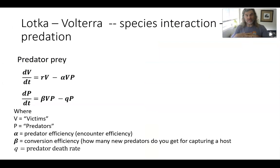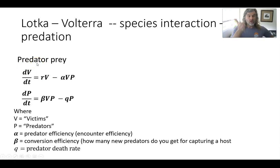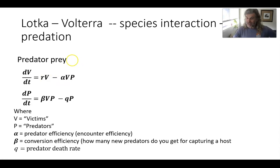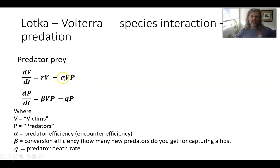So, predator-prey dynamics — let's start with the equations. What we are doing here is introducing a second species to our system of population growth. Here is our prey population, the so-called victims. That population growth rate times the population of the prey is the exponential growth model. But what's been added here is some effect of predators — some rate at which predators consume prey — an efficiency, how good they are at getting the prey, times the number of prey times the number of predators.